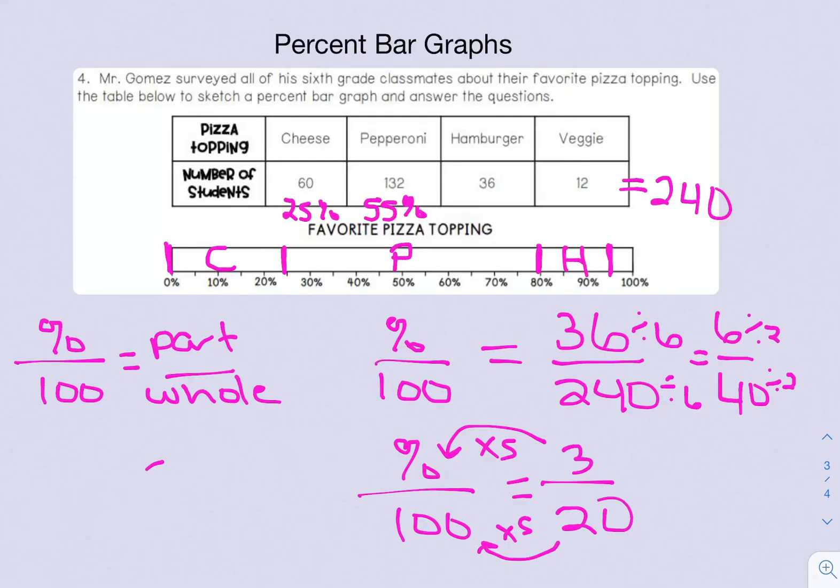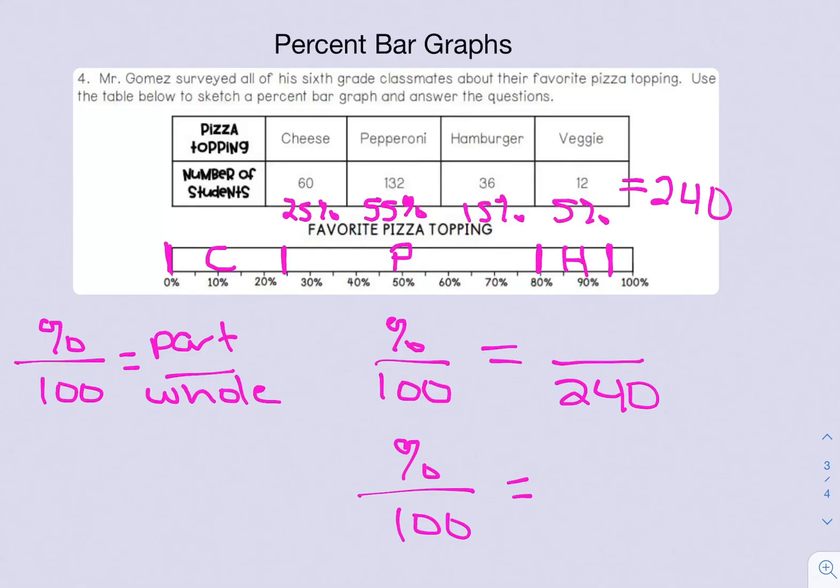Since we're at the end, we can see how much space is left on our percent bar graph. What's left is just 5 percent from 95 to 100. We know veggie should be 5 percent, but we need to solve this one to make sure, because if it's not 5 percent we know we made a mistake somewhere. We have 12 over 240. When I see 12 and 240, I know I can divide by 12. 12 divided by 12 gives you 1, and 240 divided by 12 gives you 20. Same relationship: times 5, times 5. 1 times 5 is 5 percent. So it matches.